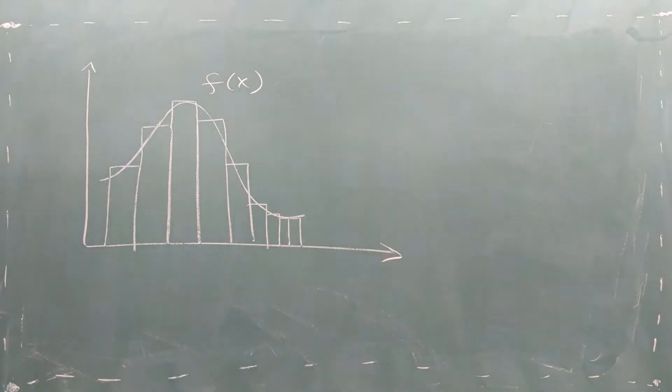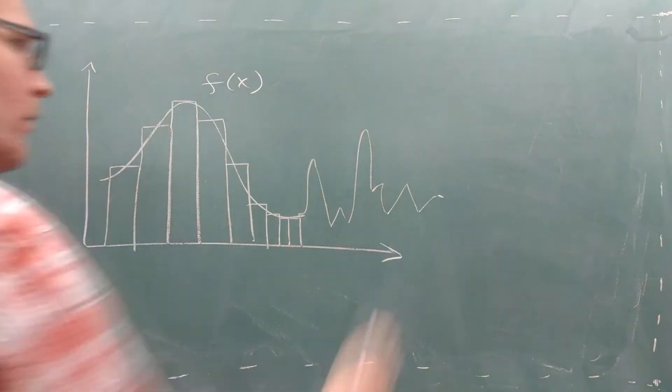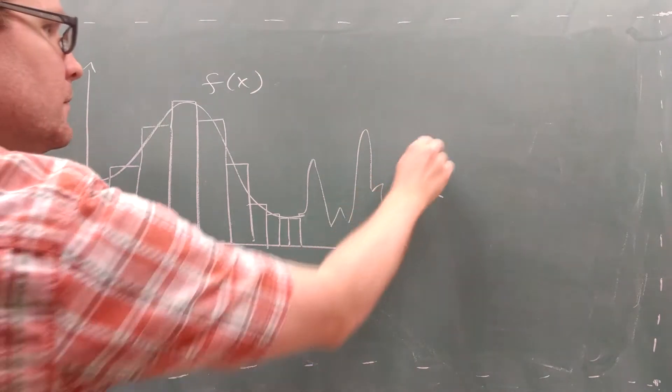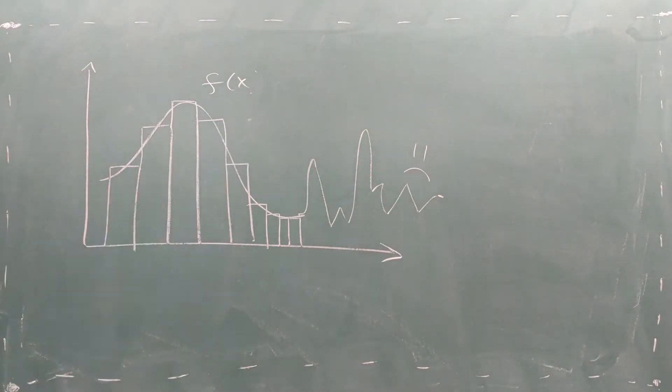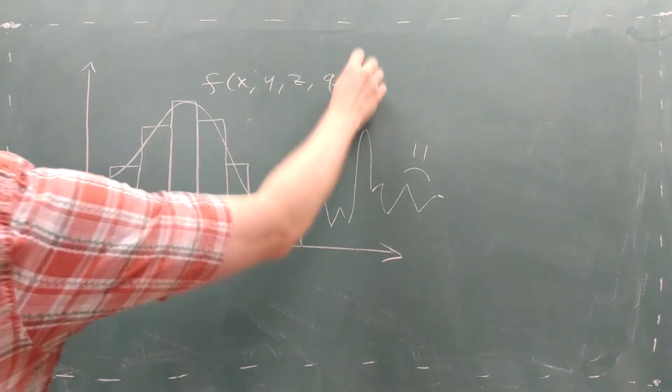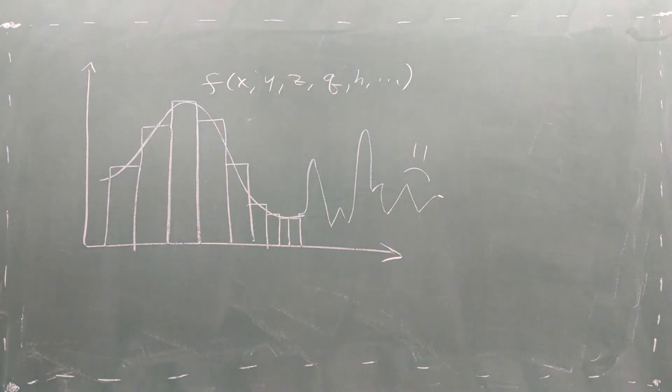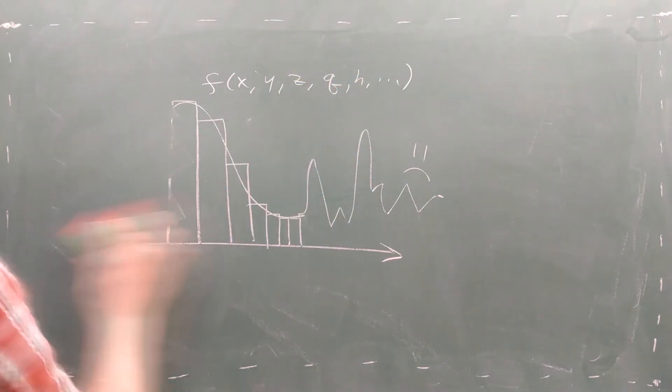A Riemann sum works well if your function is nice and smooth and lives in just one or two dimensions, but Riemann sums are difficult to use on a jagged function and become very inefficient if your function extends to several dimensions or more. When a Riemann sum doesn't provide you with the accuracy or performance you need, Monte Carlo integration provides a reliable alternative.